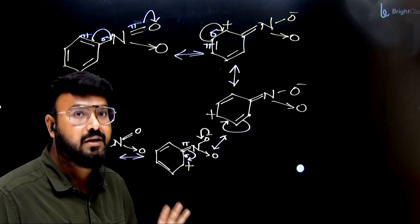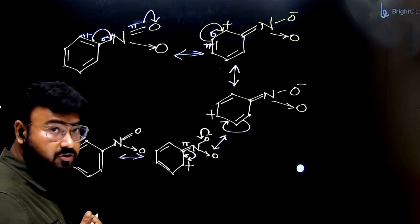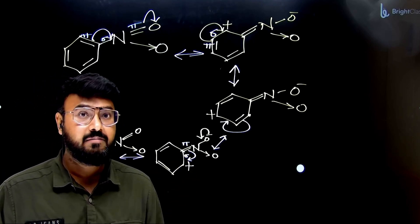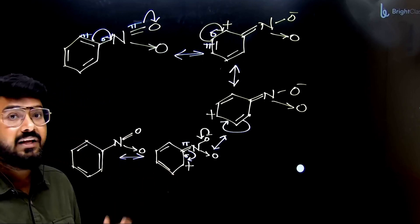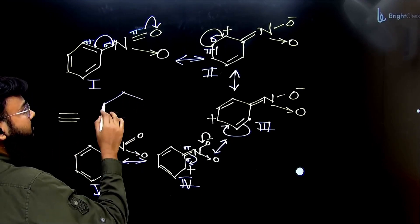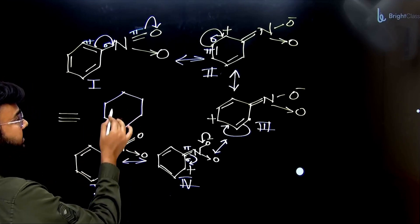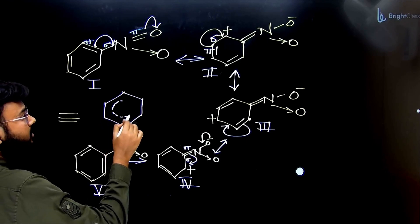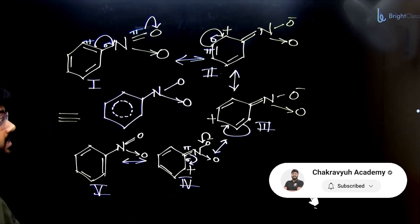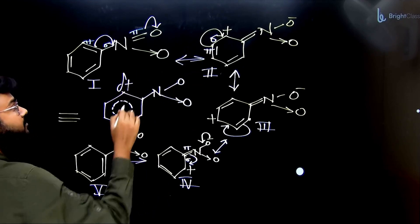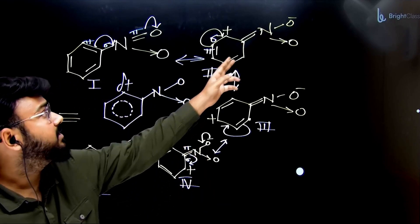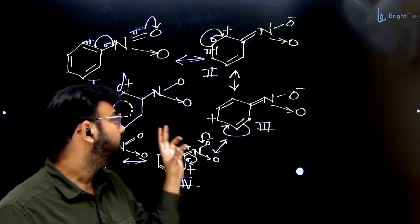Now we will draw the resonance hybrid. Remember, resonating structures are all hypothetical. When we take the sum total of all the resonating structures, we combine them all in one structure — that is called the resonance hybrid. Whenever we consider any reactions, we always see the hybrid, not the resonating structures. To draw the hybrid, we use this symbol. First draw the benzene ring. We know that the double bond was present everywhere in each carbon, so we put a dotted line. Now write the nitrogen atom, the oxygen atom, and one oxygen with a coordinate bond.